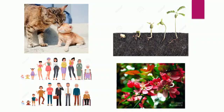But plants do make some movements in their place. Their leaves and flowers show some movements. When a bud blooms, it turns into a flower and its petals open, but all these movements are not easily seen.